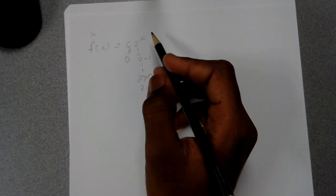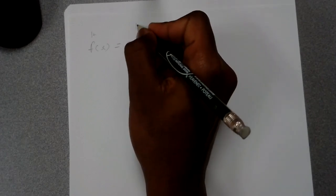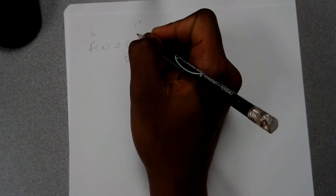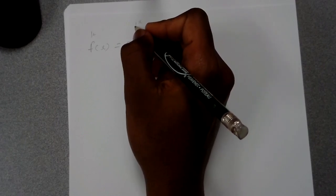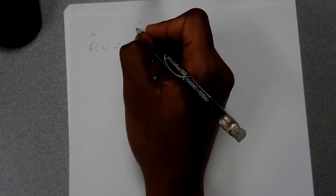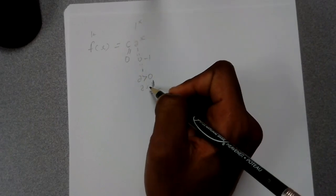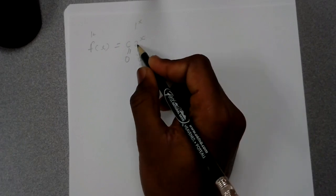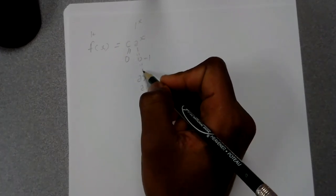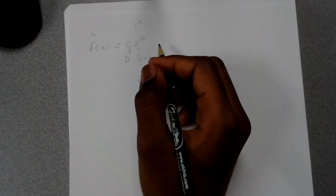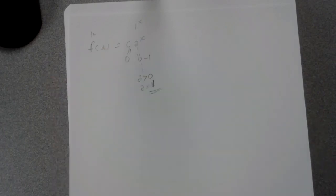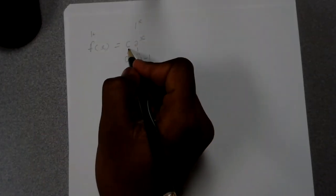The reason a cannot equal 1 is that if you put a = 1, then 1 raised to any power x is always going to be 1 — whether x is a thousand or a million, it stays 1. So that would not be an exponential function. Also, a cannot be 0 or negative. So a must be between 0 and 1, or between 1 and infinity, but never exactly 0 or 1 or negative.